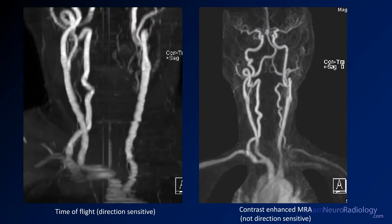Here you see the two types of images. On the left we have a time-of-flight MRA, which is direction sensitive, so what you see is an absence of the vertebral artery on that side. On the right is a contrast-enhanced MRA — you can tell because the resolution is much better and the vessels look cleaner. Now you see the vessel is present, but there's absence of the proximal subclavian and very poor filling of the artery down the arm.